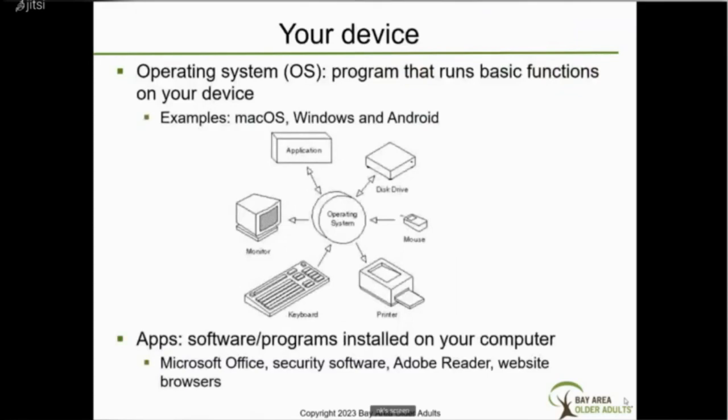Now let's look at what makes up your device. Your device is hardware, which is the physical equipment you purchased. The operating system, or OS, is the program that runs basic functions on your device, including external devices like a printer, keyboard, mouse, external monitor, or external hard drive. It also controls the ability to run other software programs or apps.